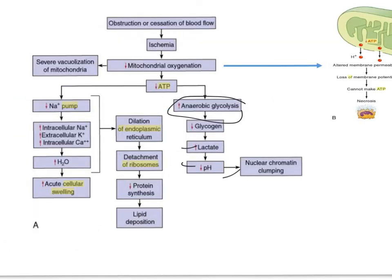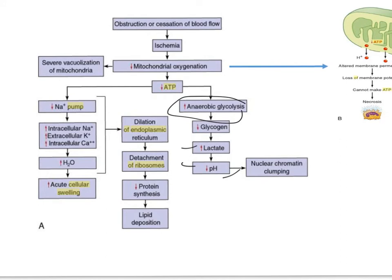Moving back to the effects of decreased ATP, a reduction of ATP causes the plasma membrane's sodium-potassium pump and also the sodium-calcium exchange to fail, leading to an accumulation of sodium and calcium. This results in cellular swelling and diffusion of potassium out of the cell, causing dilation of the endoplasmic reticulum and detachment of ribosomes from the endoplasmic reticulum, which results in reduced protein synthesis.